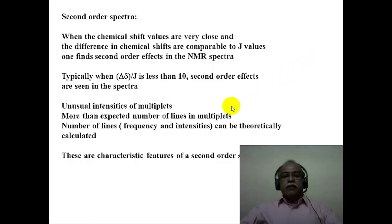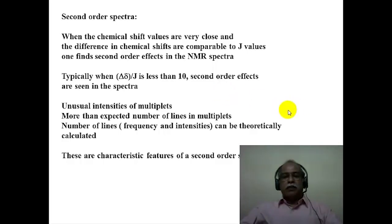The second order effect is seen as unusual intensities of the multiplet, more than the expected number of lines in the multiplet, and so on. The number of lines, frequencies, and intensities can actually be theoretically calculated for any complex NMR spectrum. These are the characteristic features of the second order spectrum: unusual intensities of multiplets and more than the expected number of lines of multiplets in the spectrum.